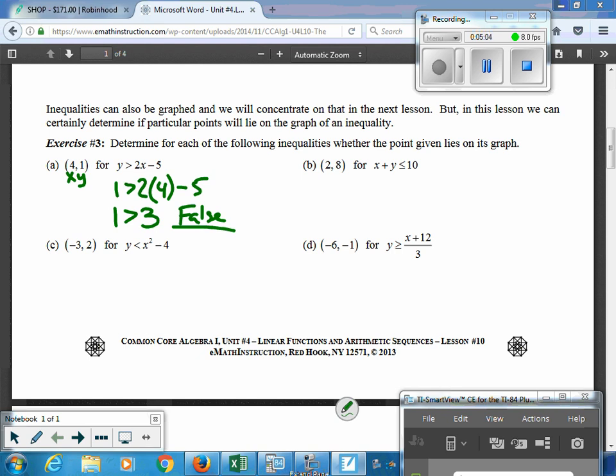For B, same thing, x and y. And you get 2 plus 8 is less than or equal to 10. So, this is 10 is less than or equal to 10, which just would be a yes or true. Either one you want to write is fine. So, that's kind of the big thing with the inequalities, is making sure you have the symbols correct.